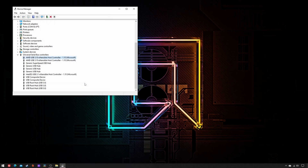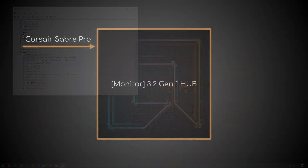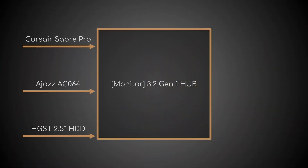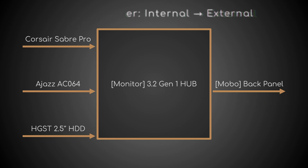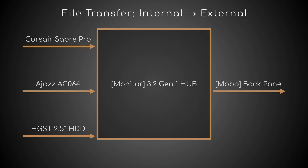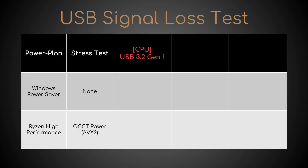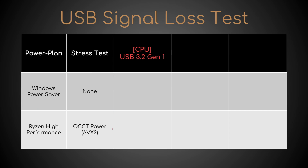Now, what does the test consist of? I connected my mouse, keyboard, and external 2.5-inch HDD to the monitor's built-in 3.2 Gen1 hub, itself plugged into a USB 3.2 Gen1 port on the back panel of the motherboard. Next, I copy-pasted a 15 GB video folder from the internal to the external HDD under two different conditions: Windows power saver plan with no active stress test, and Windows high performance plan with OCCT power on.